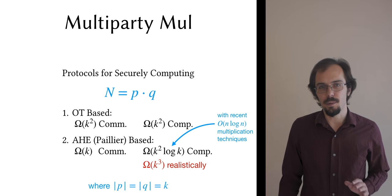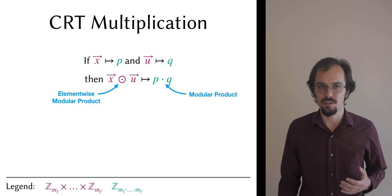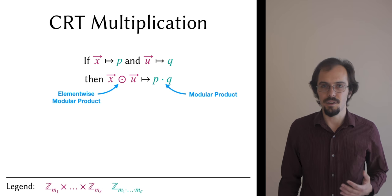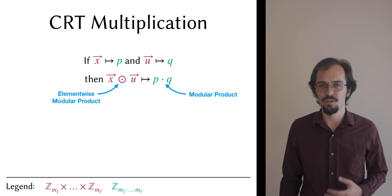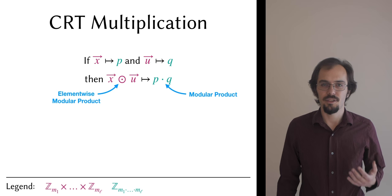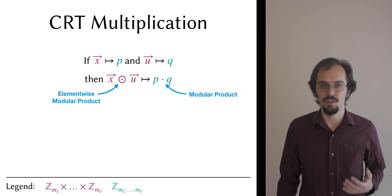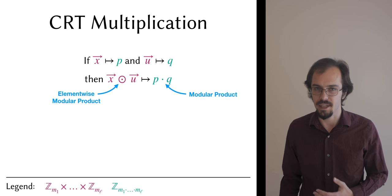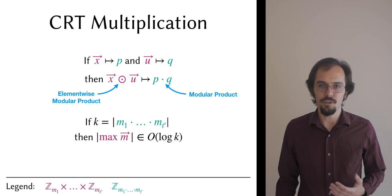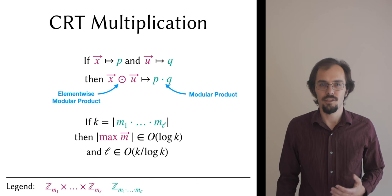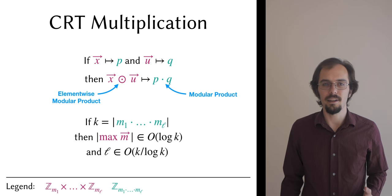Consider the single-party case again. We observe that if we take two CRT-form values x and u defined with respect to the same primorial vector M of length L, then the product of their corresponding standard form values p and q modulo the Lth primorial number corresponds to the element-wise modular product of x and u. Here I'm using the circle dot to represent element-wise multiplication. This means that if we want the standard form product of p and q, we can multiply the CRT-form values x and u element by element, then evaluate the mapping, instead of evaluating the mapping before the multiplication. We can show that if a primorial number has k bits, then the length of the largest prime in the corresponding primorial vector is in O of log k, and also that L, the length of the primorial vector, is in O of k over log k. Consequently, if our fundamental multiplication complexity is quadratic, then we can multiply two k-bit numbers in CRT-form in complexity O of k log k, as opposed to O of k squared if we did it naively.